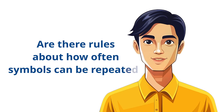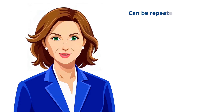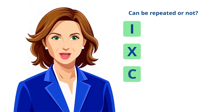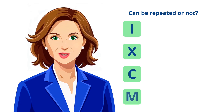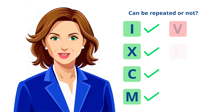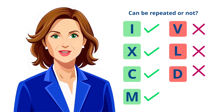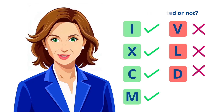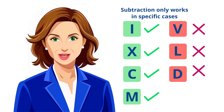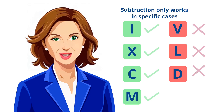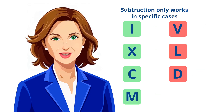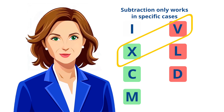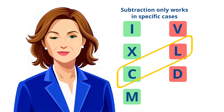Are there rules about how often symbols can be repeated? Yes, definitely. Here are a few important limits. Symbols I, X, C, and M can be repeated up to 3 times, but V, L, and D cannot be repeated. Additionally, subtraction only works in specific cases. For example, I can only be subtracted from V or X, X from L or C, and so on.